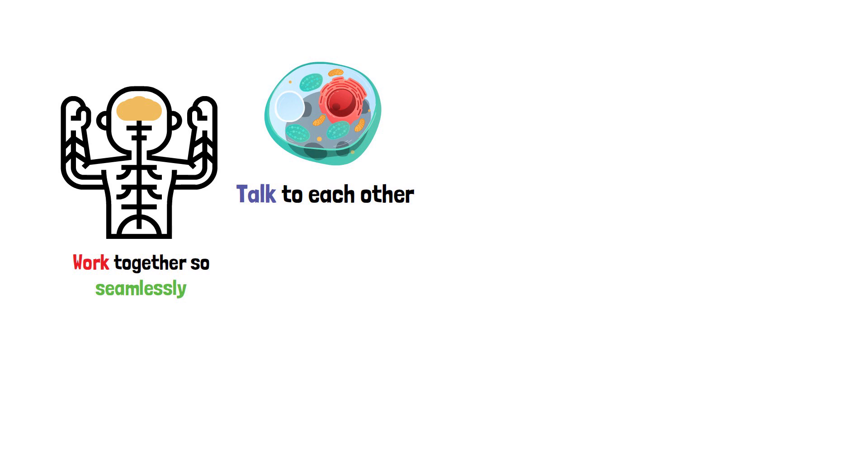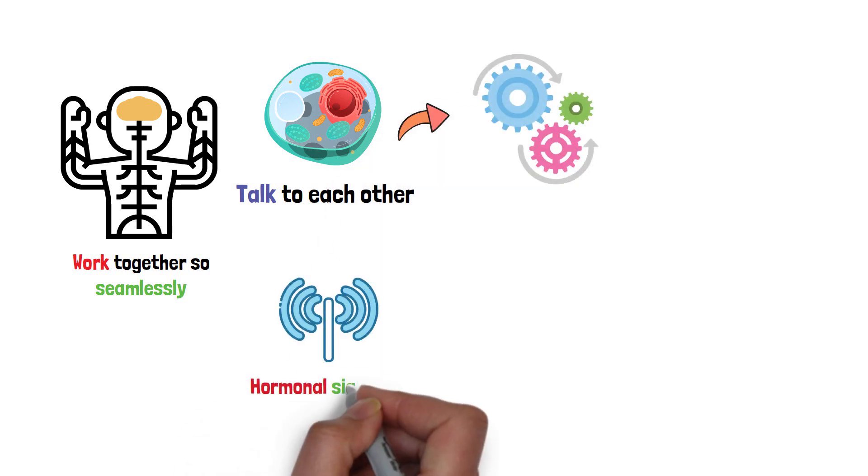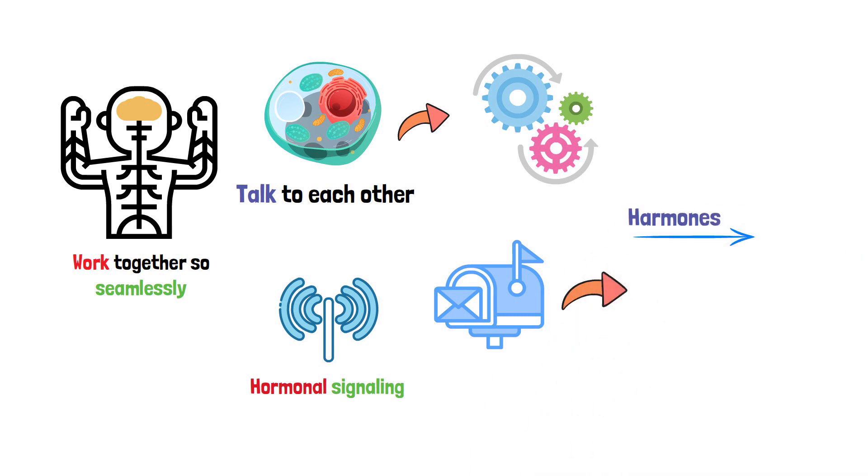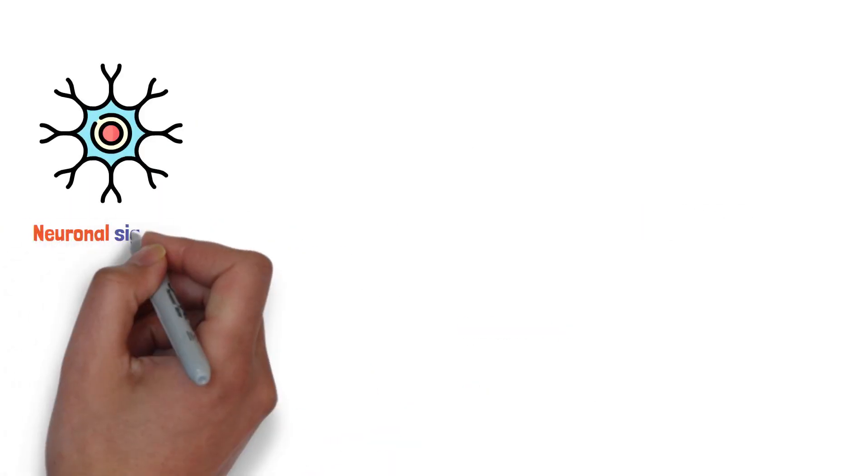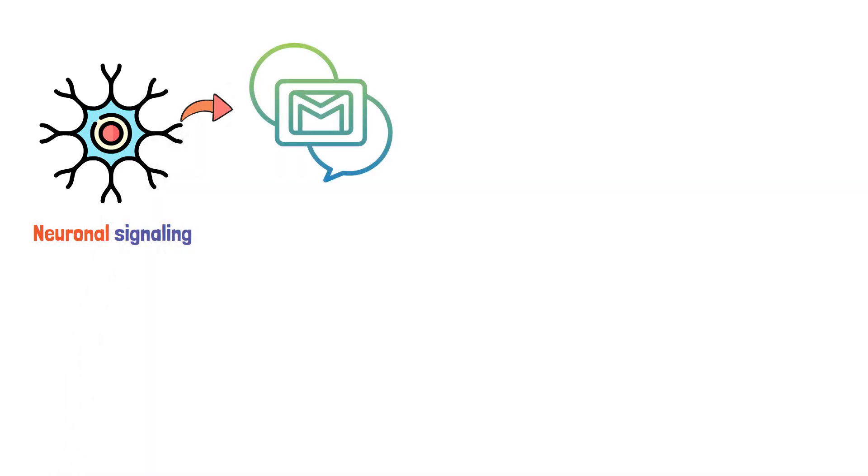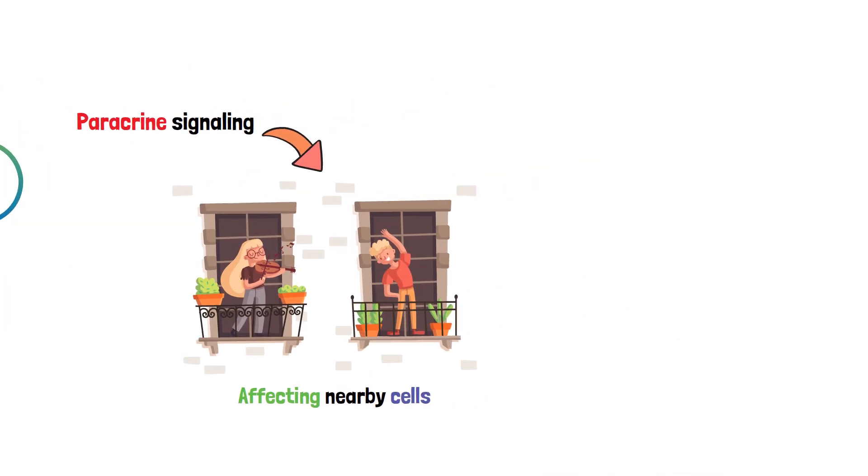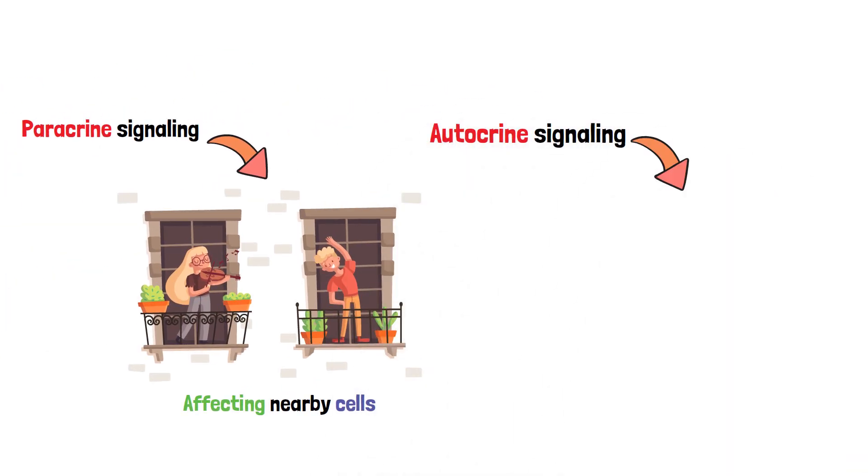But how do all these parts communicate and work together so seamlessly? Well, cells in our bodies talk to each other through four primary mechanisms. Hormonal signaling is like sending out postal mail, with hormones traveling through the bloodstream to distant targets. Neuronal signaling is the body's version of instant messaging, where nerve cells transmit rapid signals. Paracrine signaling is similar to neighbors chatting over the fence, affecting nearby cells. And autocrine signaling is like talking to yourself, where cells respond to substances they release.